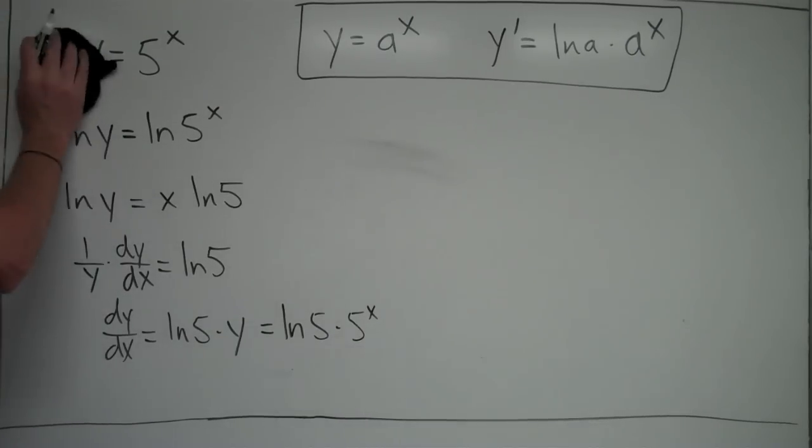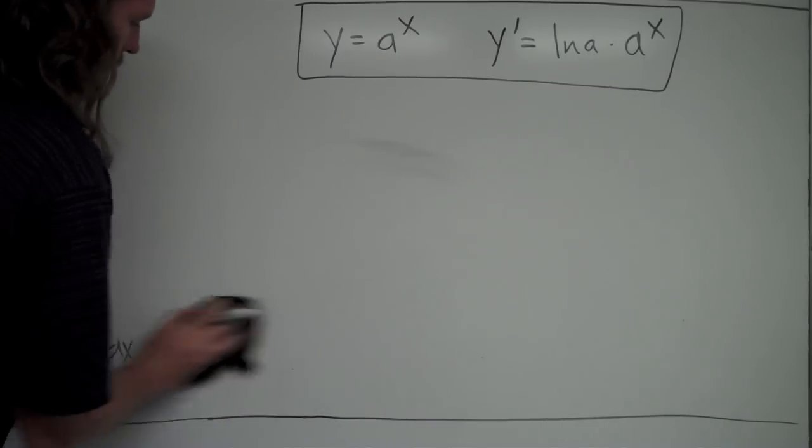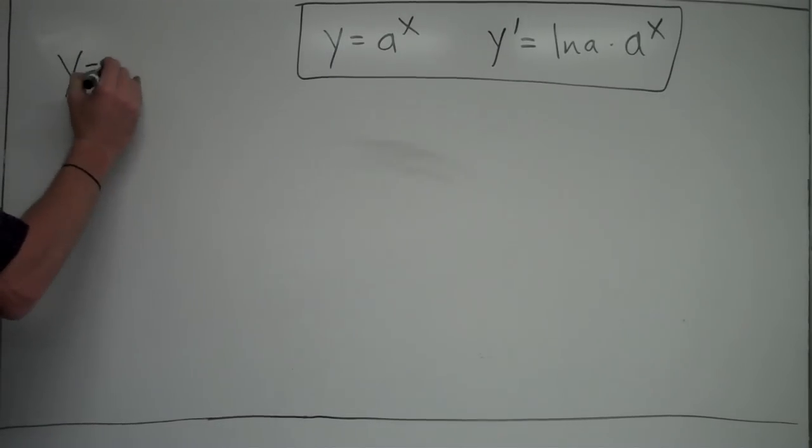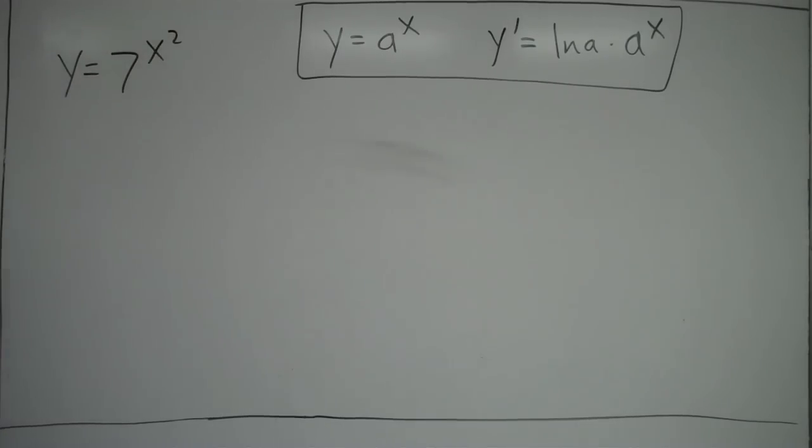Now, it does change slightly if I have something other than just x in the exponent there. So let's look if I have something like this. Like y equals 7 to the x squared, say, for instance.